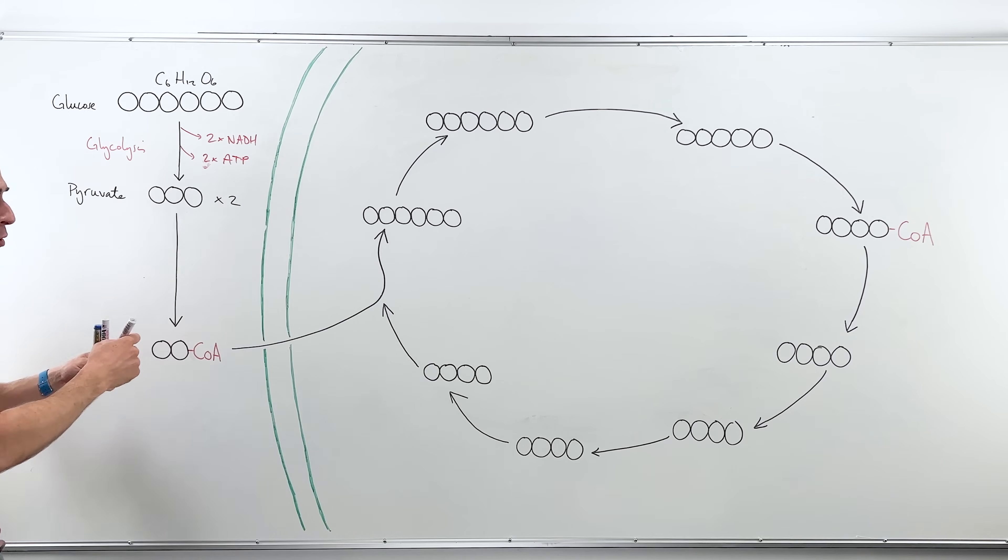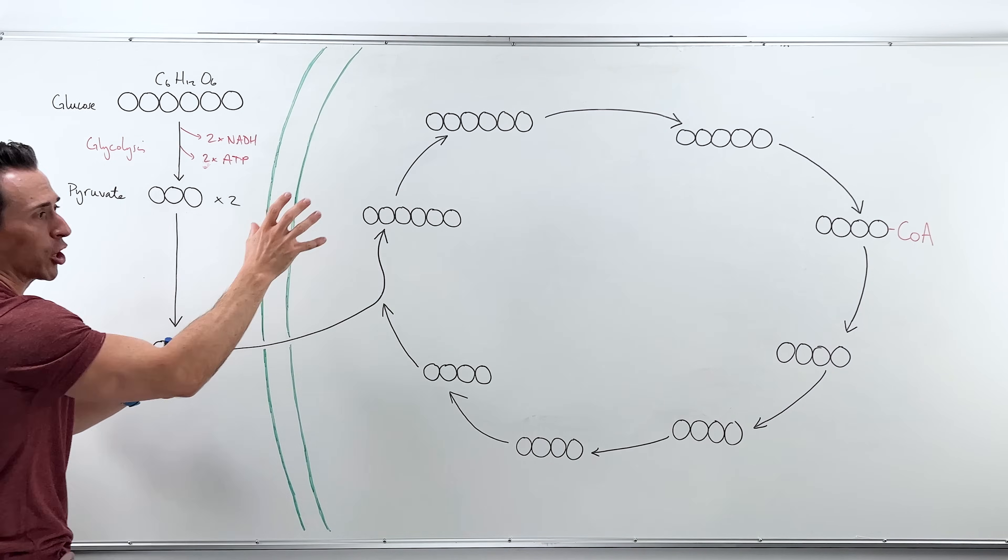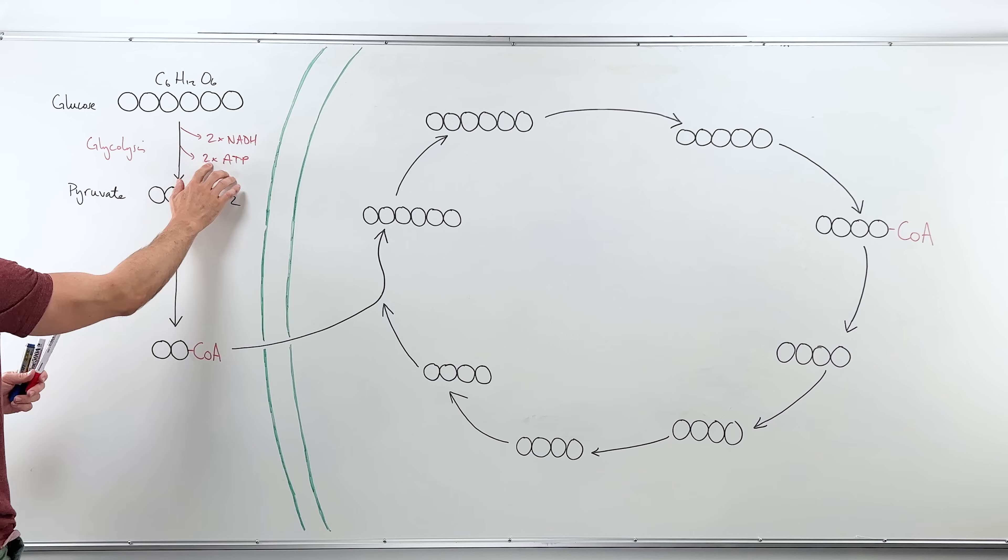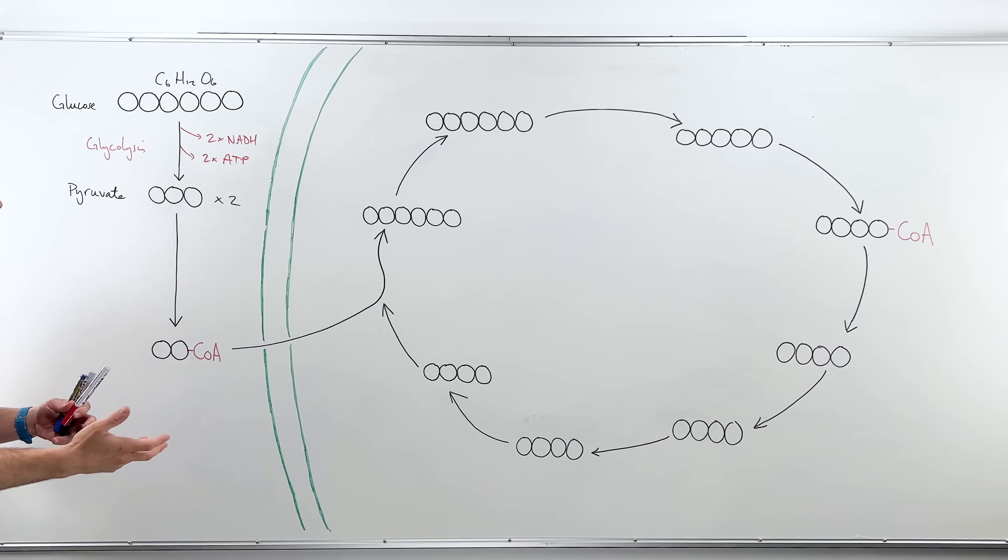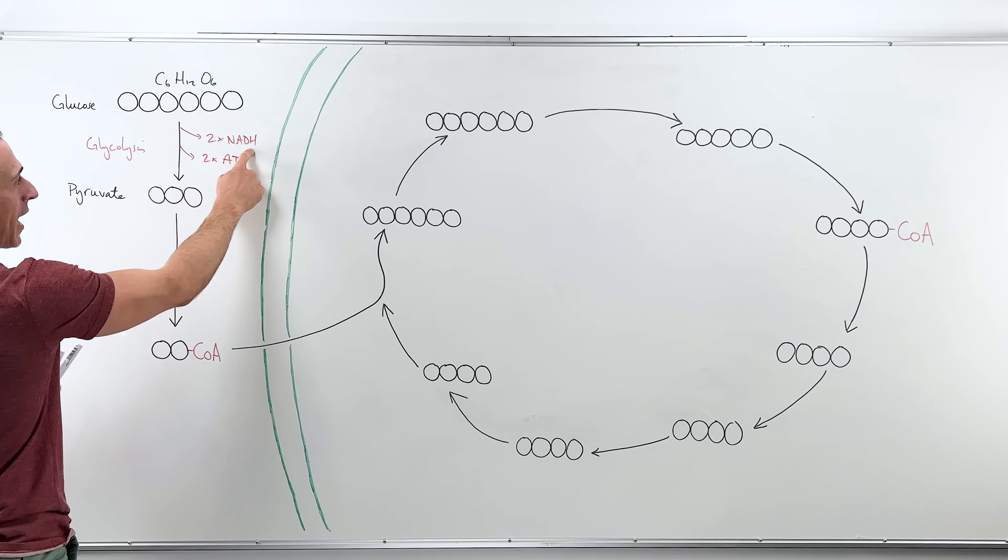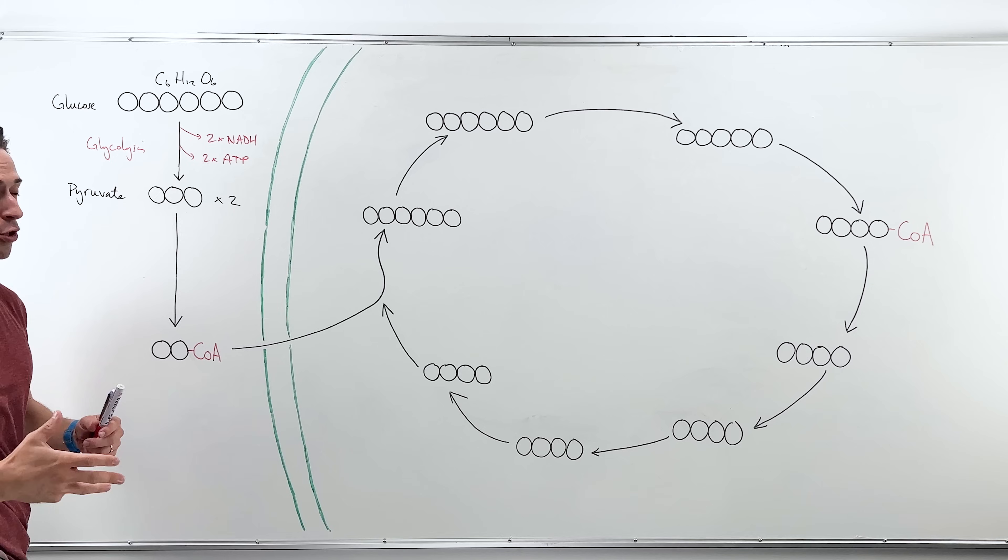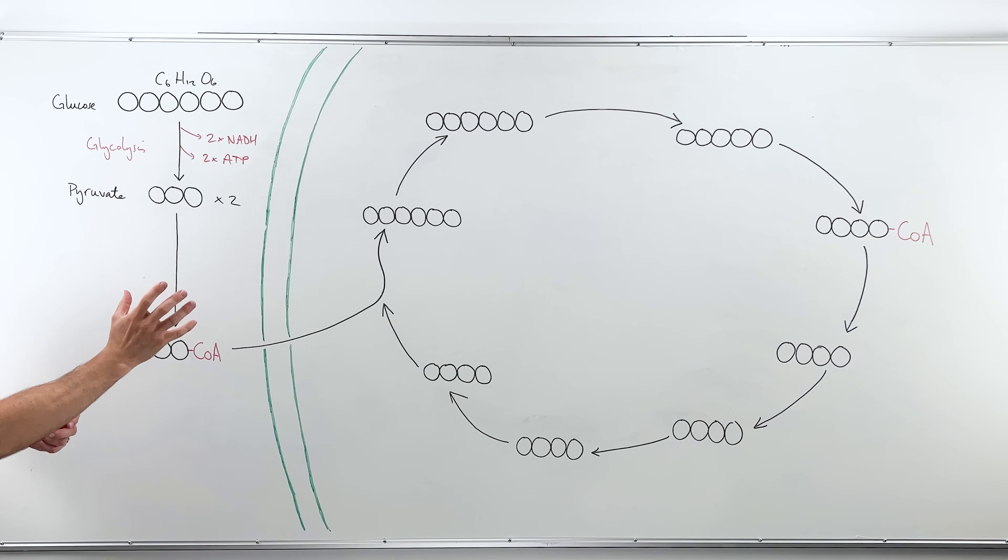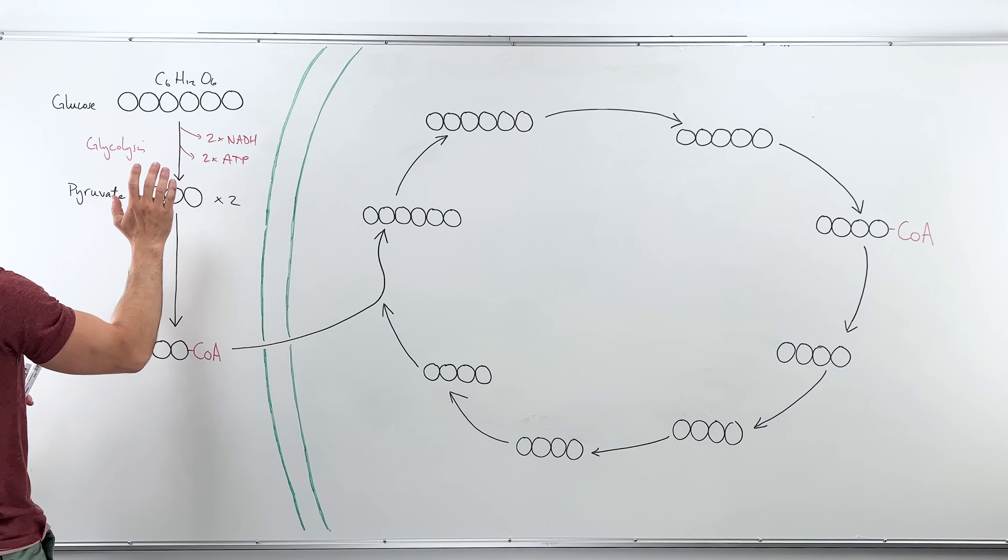Now the whole purpose of this cellular respiration—glycolysis, Krebs cycle, then the electron transport chain—is to produce ATP either directly or to produce ATP indirectly via NADH or FADH2. So this is our net gain from the process of glycolysis, keep that in mind.